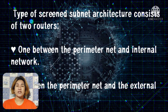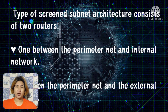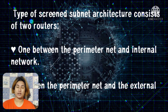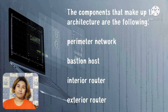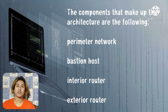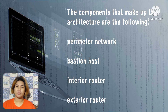One router sits between the perimeter network and the internet, and another sits between the perimeter network and the external network. The external network is usually the internet. The components that make up the architecture are: first, the perimeter network; second, the bastion host; third, the interior router; and last, the exterior router.